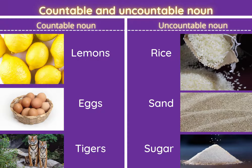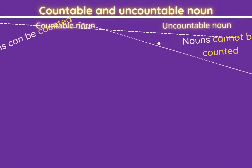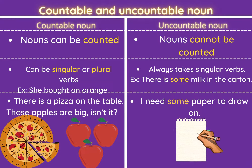Moving on to our next category: countable and uncountable nouns. As you can see, lemons, eggs, and tigers are all nouns that can be counted — and hence they come under countable noun. But rice and sugar cannot be counted, so they come under uncountable noun. The nouns that can be counted are countable nouns, and those which cannot be counted are uncountable nouns.